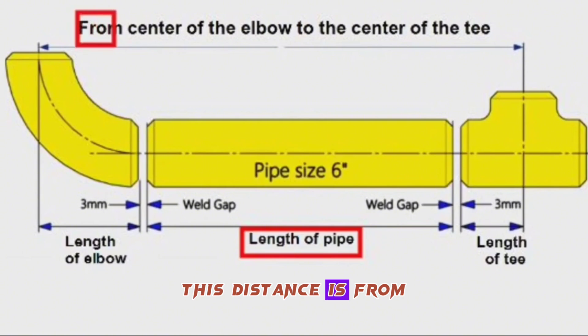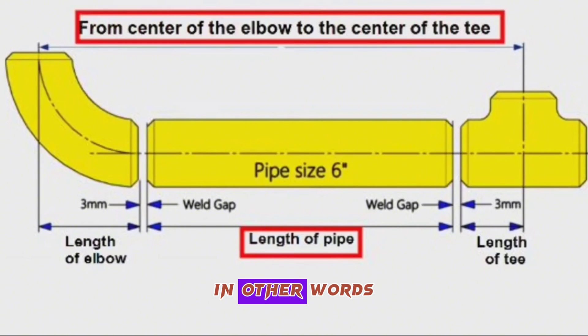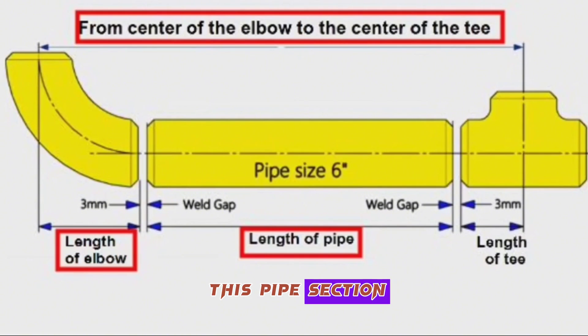This distance is from center of elbow to the center of the T, in other words, this is full length. This is length of elbow which is used in this pipe section. This is length of T which is used in this pipe section.